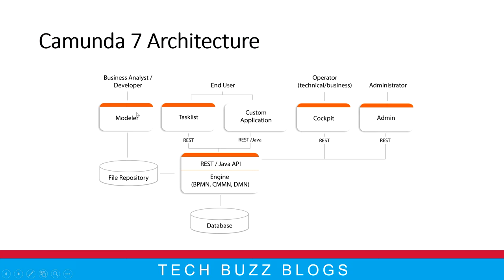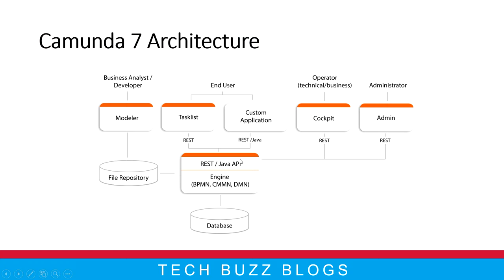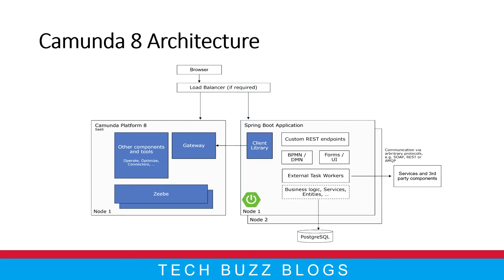Whenever you design in the modeler, the files are stored in the file repository of your application — for Spring Boot that would be the resources folder, depending on your application. This file repository belongs to your application, and that application will then interact with the Camunda databases. Camunda gives you a lot of flexibility with databases: Oracle, MySQL, or whatever you prefer.